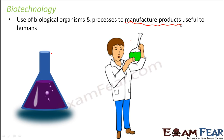Yes, exactly — they all fall under biotechnology. Curd preparation is a relatively simple process where you do not need a lot of technology or equipment. But when you talk about preparation of alcohol or antibiotics, you cannot just prepare them at home — you need a lot of equipment and set up an entire apparatus for production. So all those things require technology. You are combining biological organisms with technology and the result is manufacturing products useful to human beings — that is biotechnology.